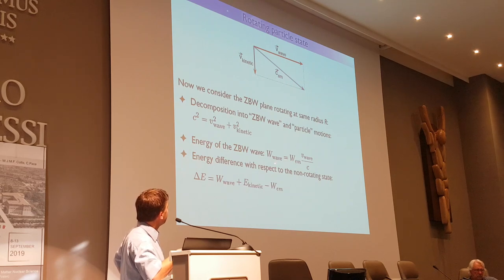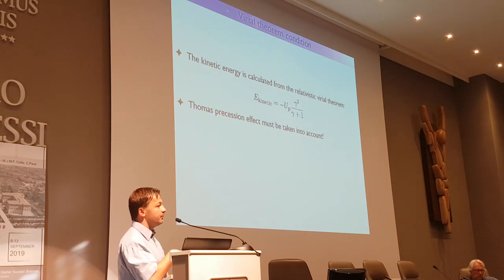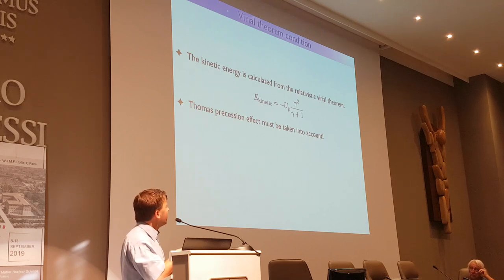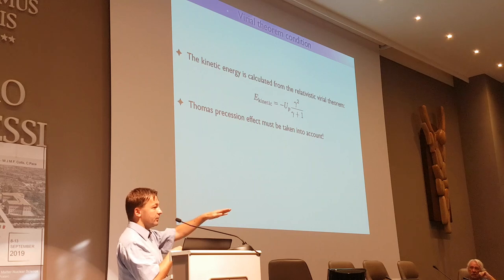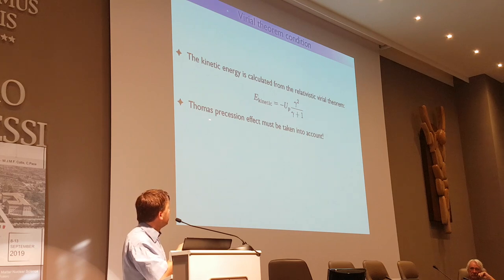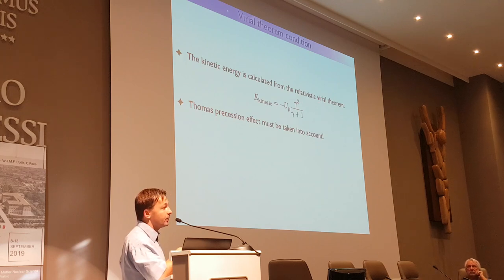Now we know the wave energy term. To find the kinetic energy term we apply the virial theorem — specifically the relativistic virial theorem, because the speeds are in the relativistic regime. In many textbooks the relativistic formula is written as gamma over (gamma plus one), valid only for straight motion. When rotating, the motion is circular, and for circular motion you need to account for the Thomas precession effect. Doing the calculation, the relativistic factor comes out as gamma squared over (gamma plus one).